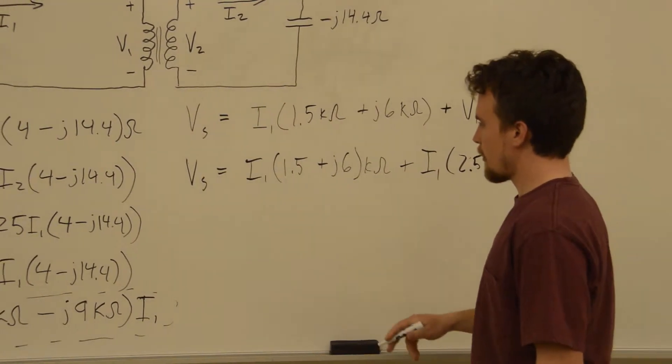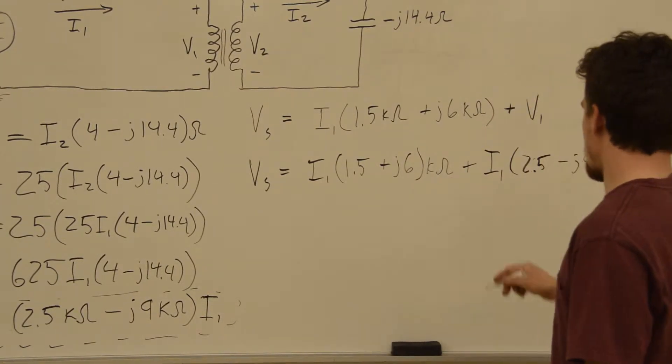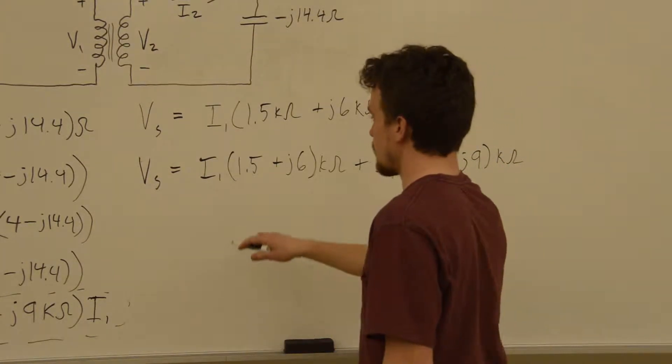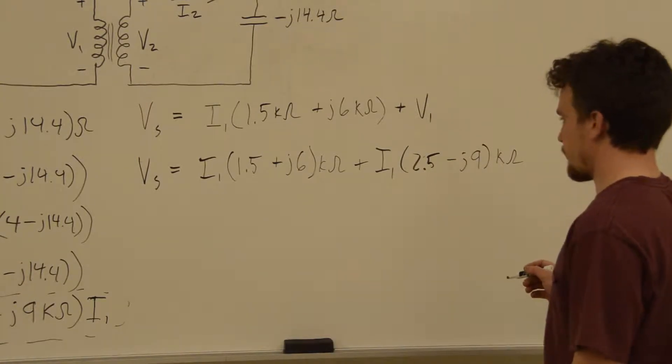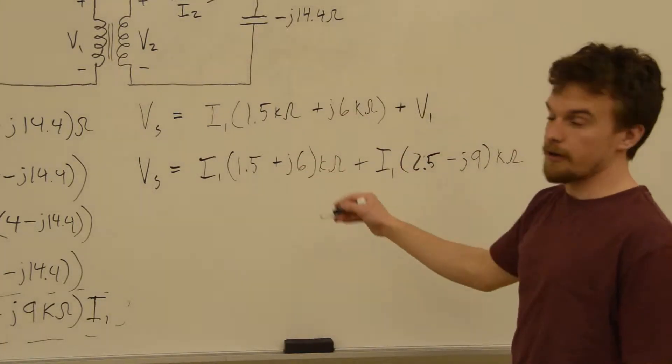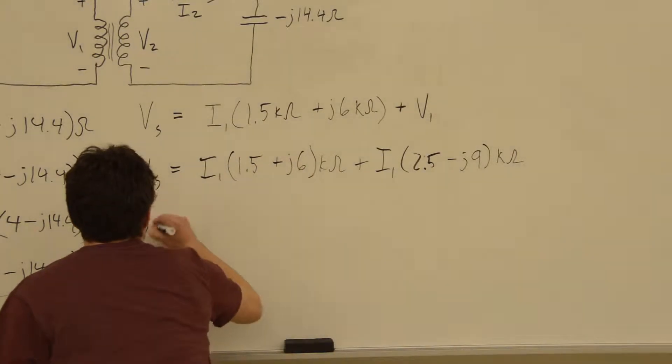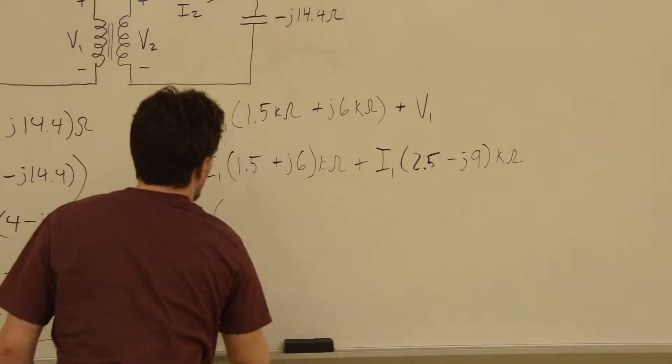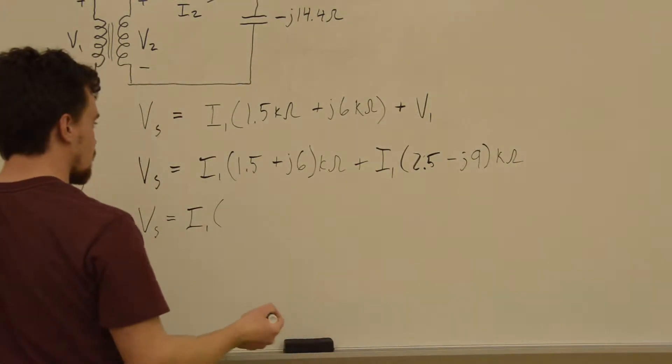Okay, so now we have a term that has only Vs and I1 as variables in it. And we know the value of Vs, so we can use this to solve for I1. So we'll rearrange this a little bit. We can combine these. We could factor I1 out and then add the complex numbers.